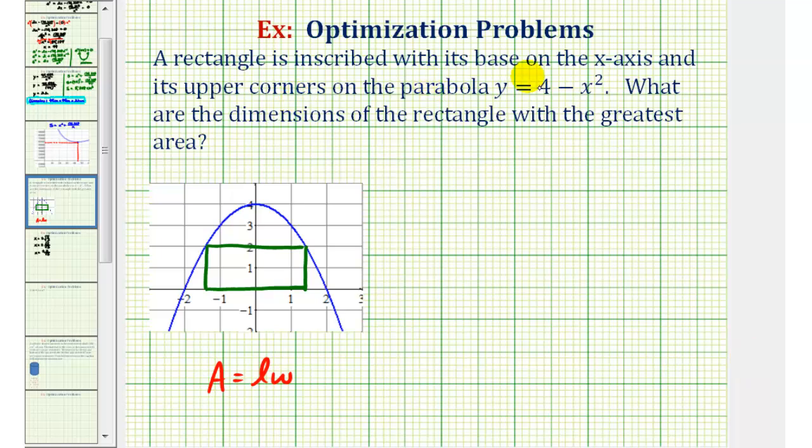A rectangle is inscribed with its base on the x-axis and its upper corners on the parabola y equals 4 minus x squared. We want to know what are the dimensions of the rectangle with the greatest area.